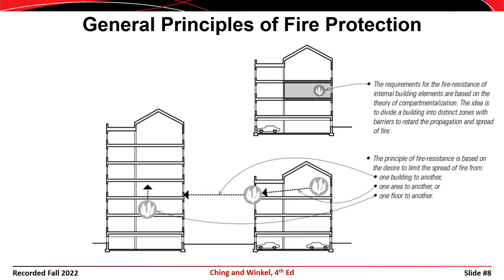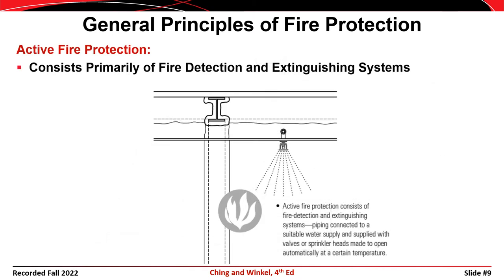Think of fire doors that automatically close when a fire alarm goes off. Those doors keep the fire from spreading and deprive the fire of oxygen. After that, our goal is to suppress the fire using active fire protection or at least slow the spread of the fire using passive fire protection. Active fire protection is, as the name implies, something that is done proactively to try and either suppress the fire or extinguish it entirely.